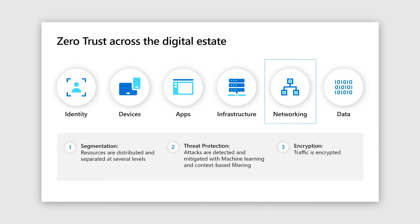In networking, the focus of the zero trust approach is to create an infrastructure to prevent attacks from moving laterally across the network. If two resources share a connection and one resource has a security threat breach, the other should not be impacted. There are three core principles for zero trust in networking: segmentation, which involves the separation and distribution of resources; threat protection, meaning attacks are detected and mitigated with machine learning and context-based filtering; and encryption across all traffic.